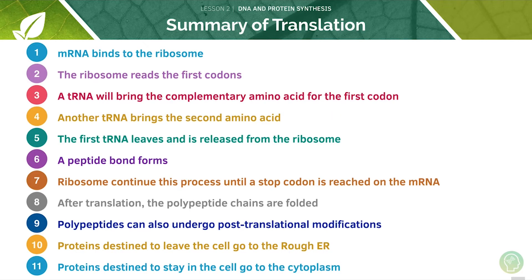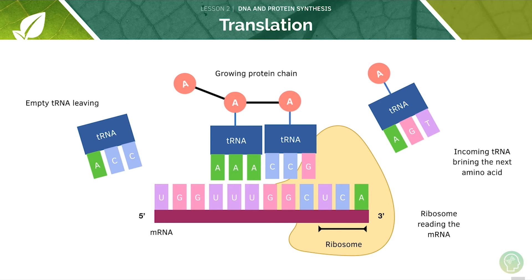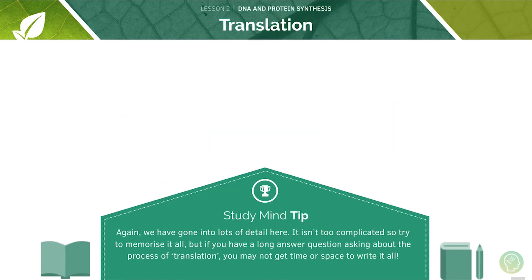Here are those 11 steps again — this is a good summary diagram. We've gone into lots of detail here. It isn't too complicated, so do try to memorise it all, but if you have a long answer question asking about the process of translation, you may not get the time or space to write every single thing down.